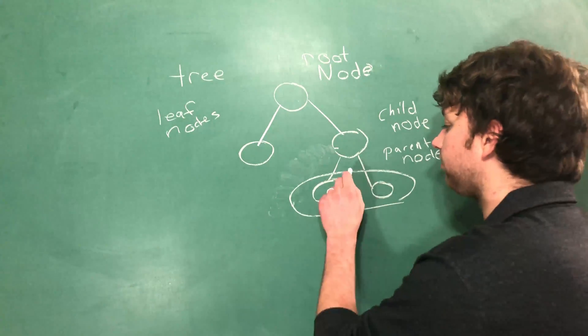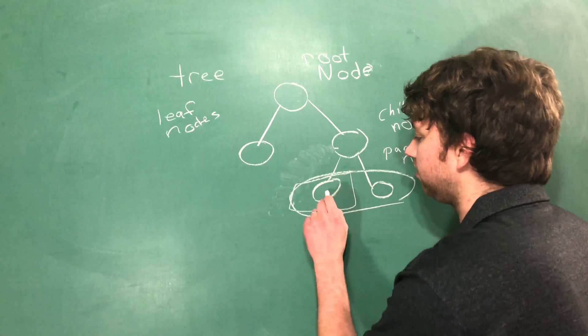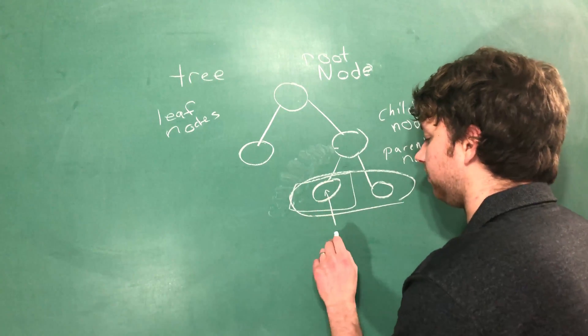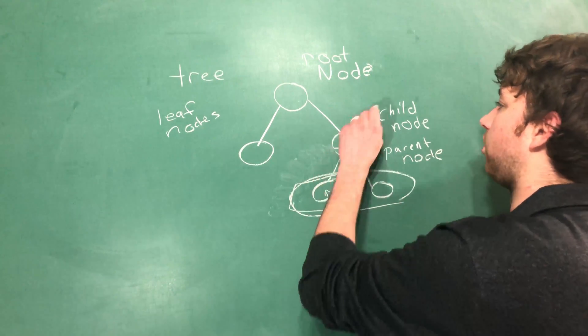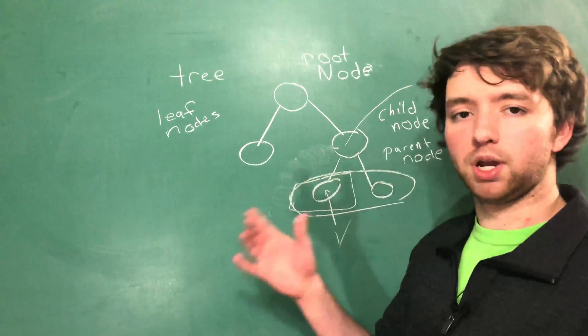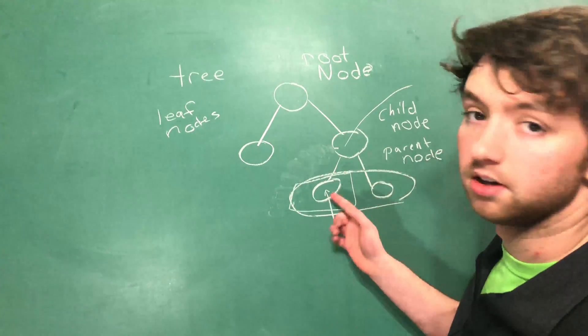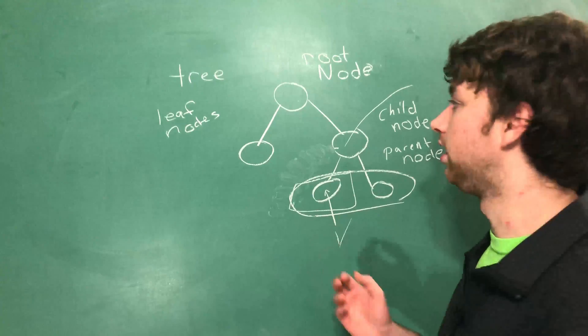When we get into making these trees, the information inside of this node, for example, is going to be very important, whereas these nodes are going to contain information on how to get to this node. This is like the end result, and this is kind of like the path to get there.